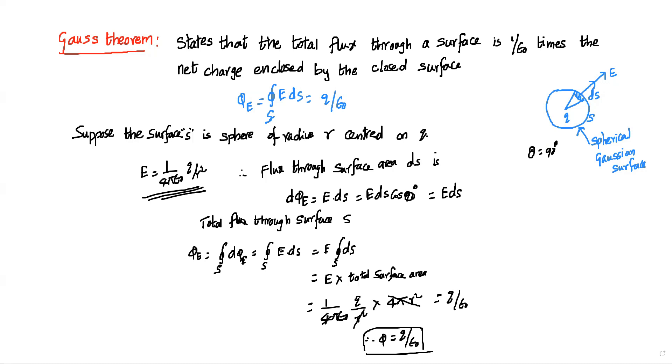Therefore phi E is equal to the closed surface integral of E dot ds, which equals q by epsilon naught. This confirms Gauss theorem.